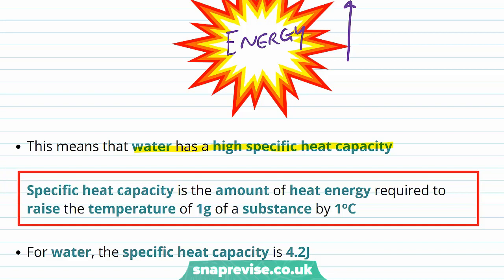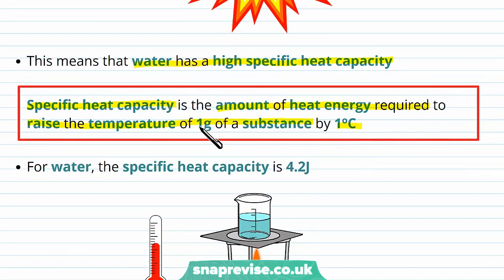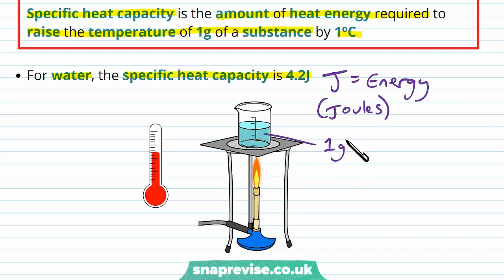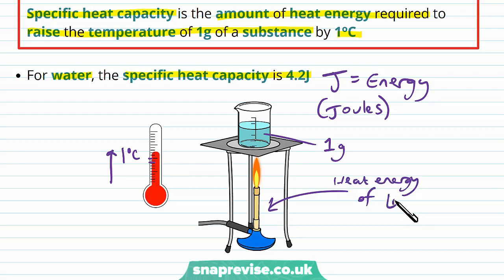Specific heat capacity is defined as the amount of heat energy that's needed to raise the temperature of one gram of something by one degree Celsius. So we're heating up one gram of something by one degree, and how much energy that takes describes a substance's specific heat capacity. For water, this value is 4.2 joules. So if we have one gram of water in a beaker, to raise the temperature by one degree Celsius, we would have to give it 4.2 joules of heat energy.